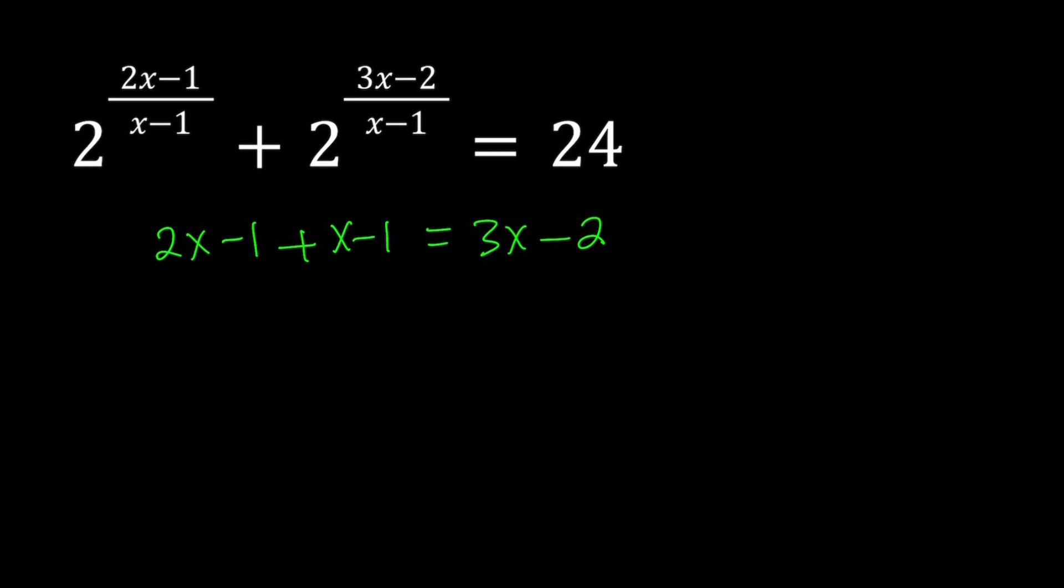Now, how can we use that information in the problem? Notice that we have 3x minus 2 here and 2x minus 1 here, and these two fractions have the same denominator, which is x minus 1. So we're going to use that fact.